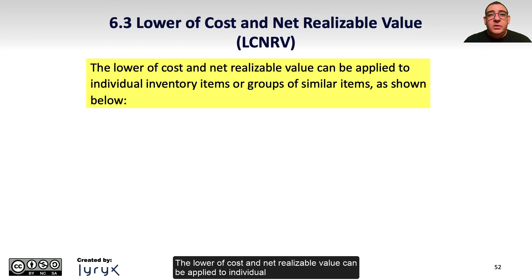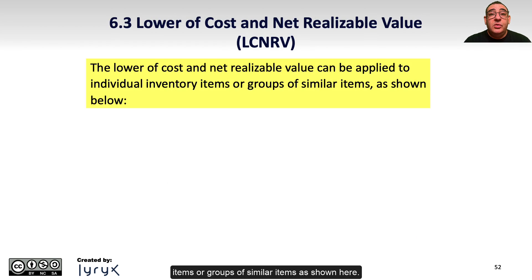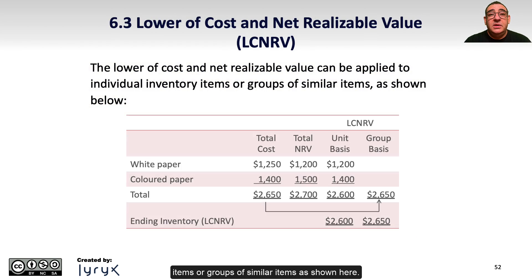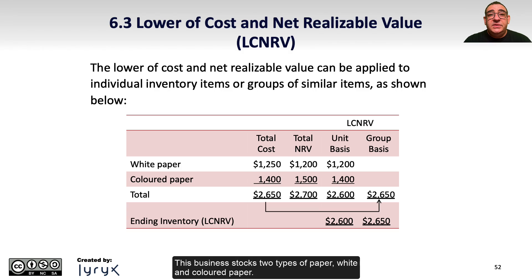The Lower of Cost and Net Realizable Value can be applied to individual items or groups of similar items as shown here. This business stocks two types of paper: white and colored paper.